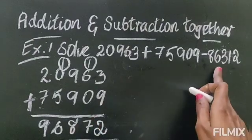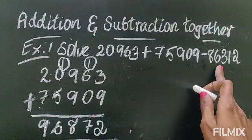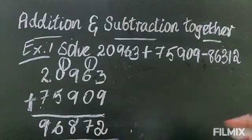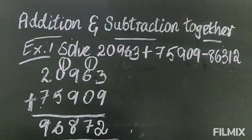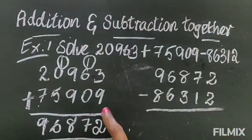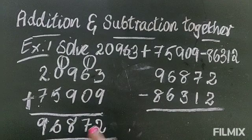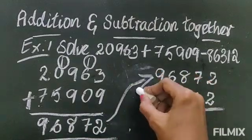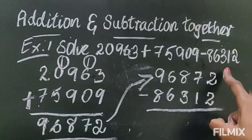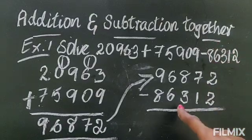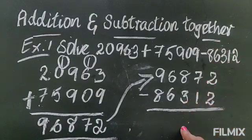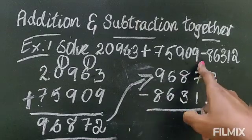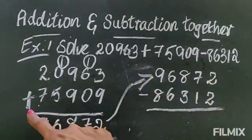Now from this total you will minus the third number. What is the third number that is given? So let's arrange these two numbers in order. Okay, I have arranged this sum. That sum and the third number I have written. Now I am going to do the minus. This is minus, so you have to minus. There was addition before, so you added.